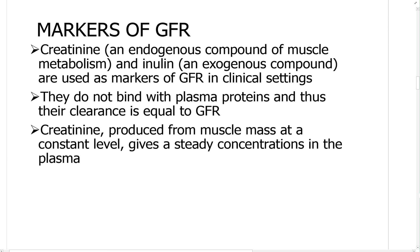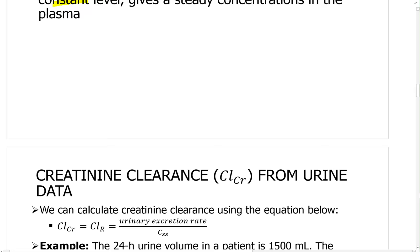Now, markers of GFR — how we can measure GFR. We need something which only undergoes filtration with no reabsorption. One of those markers is creatinine and another is inulin. We will use creatinine. Creatinine is an endogenous compound of muscle metabolism, and inulin is an exogenous compound which is administered to measure GFR. For our class we will mainly focus on creatinine. One concept to remember: creatinine is produced from muscle mass at a constant level, giving a steady-state concentration in the plasma. As a result, the creatinine level will be influenced by body weight.